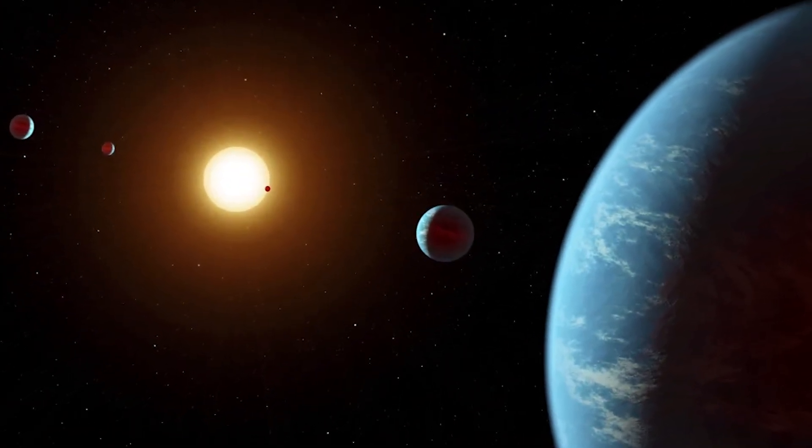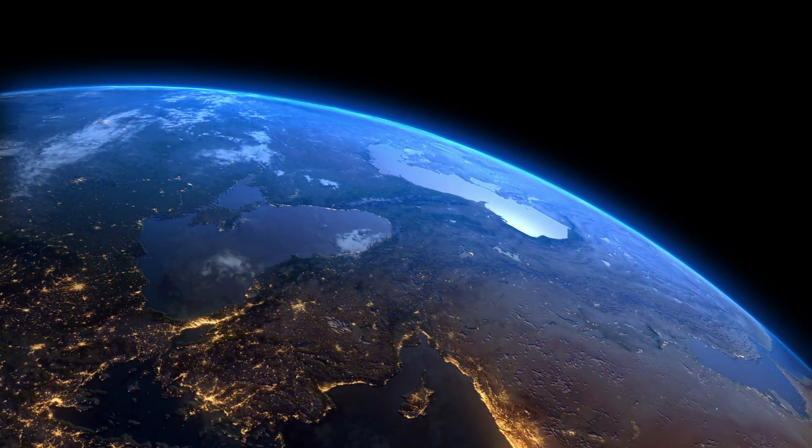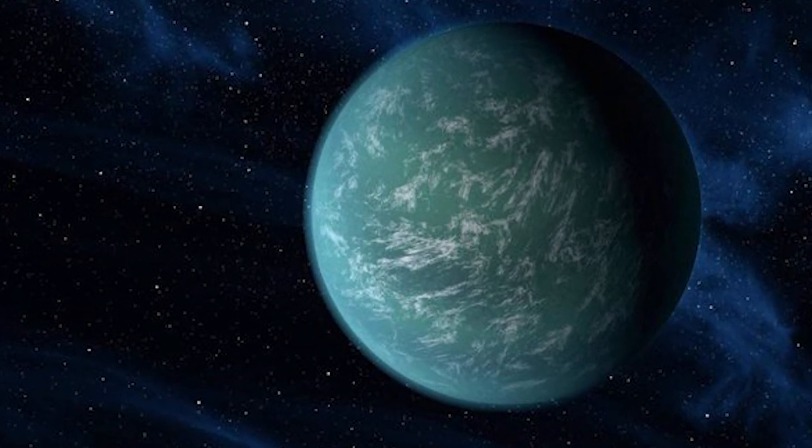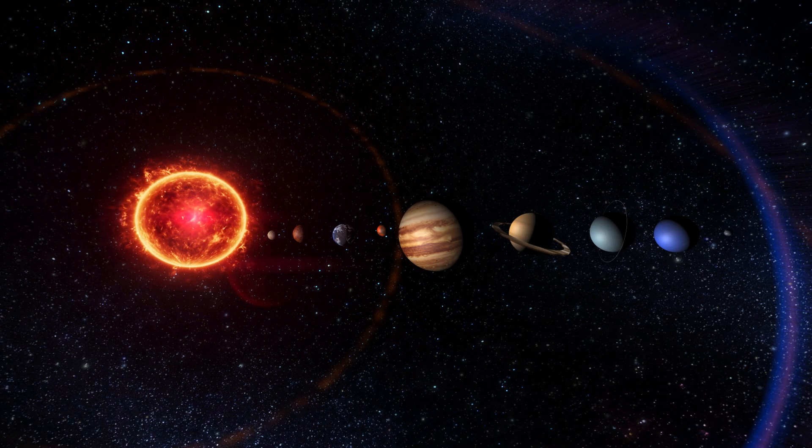Exoplanets like K2-18b are called sub-Neptunes because their sizes are between Earth and Neptune. The makeup of their atmospheres is often a point of debate among astronomers because they differ from all the planets in the solar system.